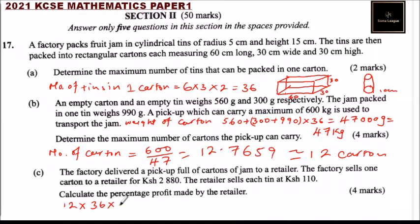Each can is being sold at 110, so that is what the retailer will get. The factory has delivered 12 cartons, you multiply by 2,880 per carton. When you calculate this, the retailer makes 47,520 and the factory sells at 34,560, which gives a profit of 12,960.